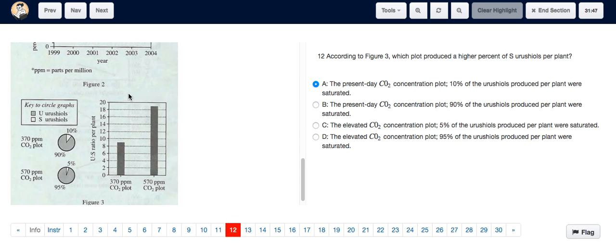So for the first part, we have to look at the bar graph. We can see that the bar graph represents the U to S ratio, that is the unsaturated to saturated ratio. That ratio is lower for the 370 ppm plot.